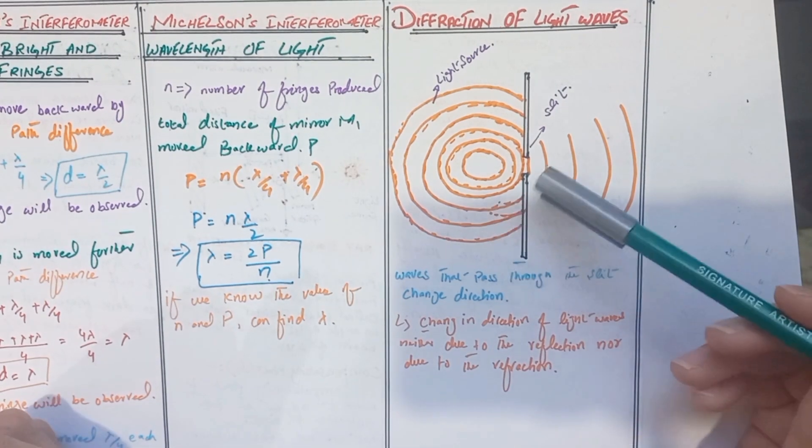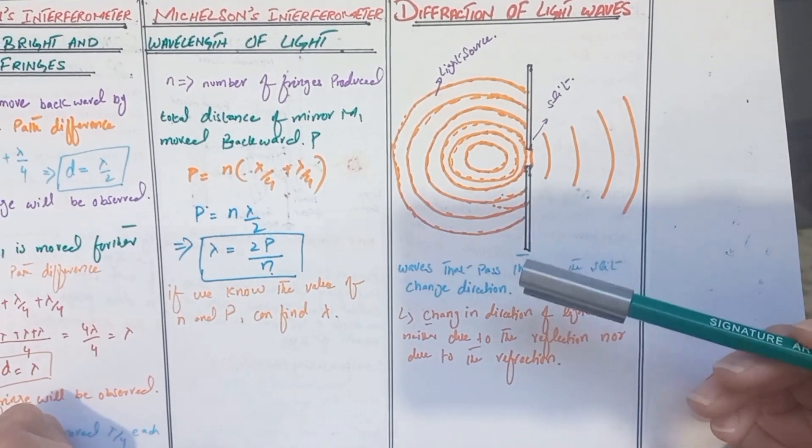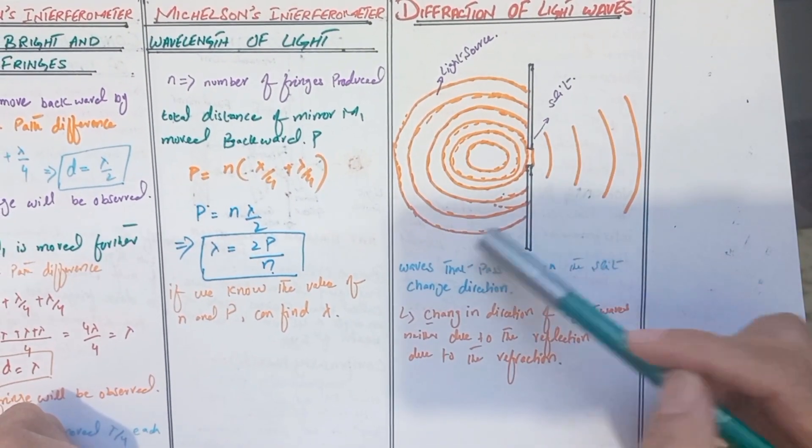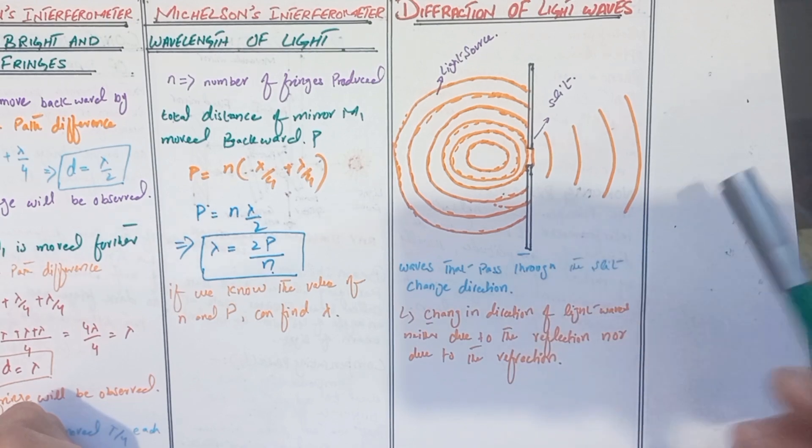Light waves can change direction due to reflection and refraction. However, the phenomenon we describe in this video is separate from reflection and refraction.